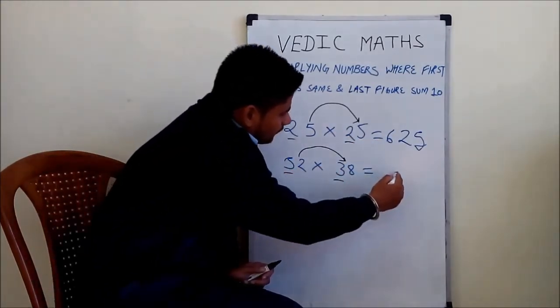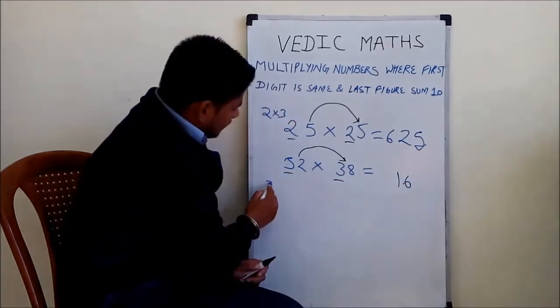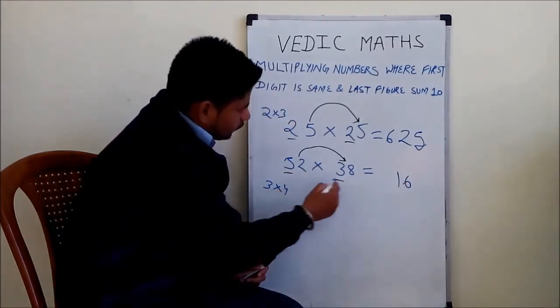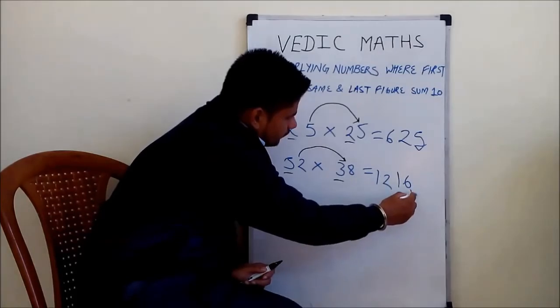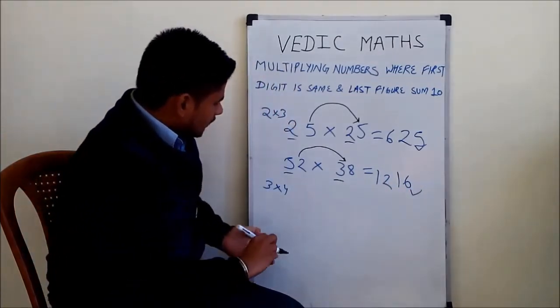Similarly, 2 times 8 equals 16, multiply 3 into 4 equals 12, and we get the answer. Similarly, if we multiply 44 into 46...